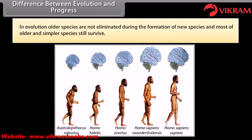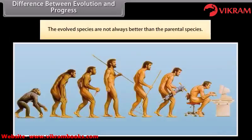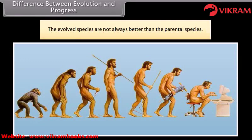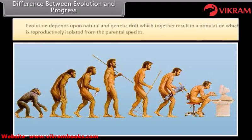In evolution, older species are not eliminated during the formation of new species, and most older and simpler species still survive. The evolved species are not always better than the parental species. Evolution depends upon natural selection and genetic drift, which together result in a population that is reproductively isolated from the parental species.